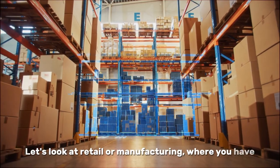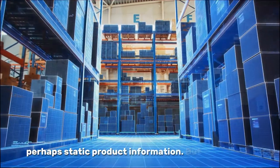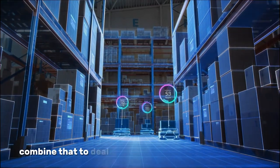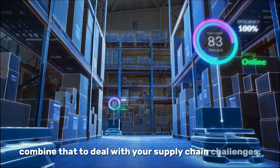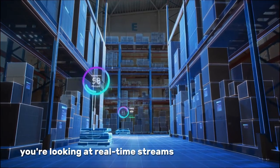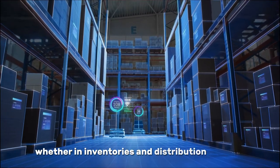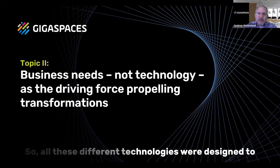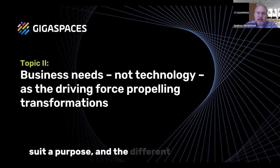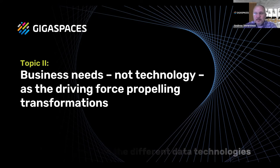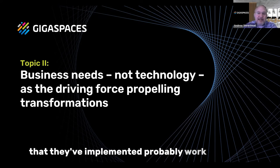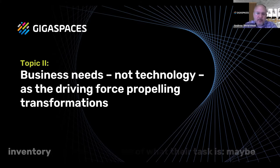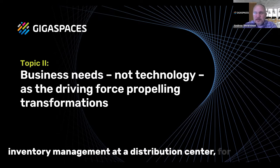Let's look at retail or manufacturing, where you have perhaps static product information, but you're needing to combine that to deal with your supply chain challenges. You're looking at real-time streams of sales and stores, what are inventories and distribution centers. All these different technologies were designed to suit a purpose, and the different data technologies that they've implemented probably work fantastic in that sort of micro view of their task — maybe inventory management at a distribution center, for example.